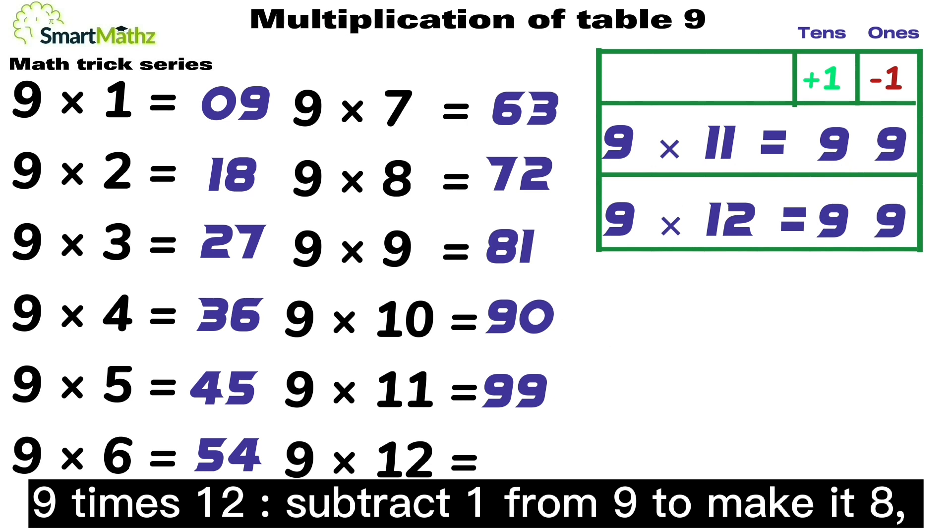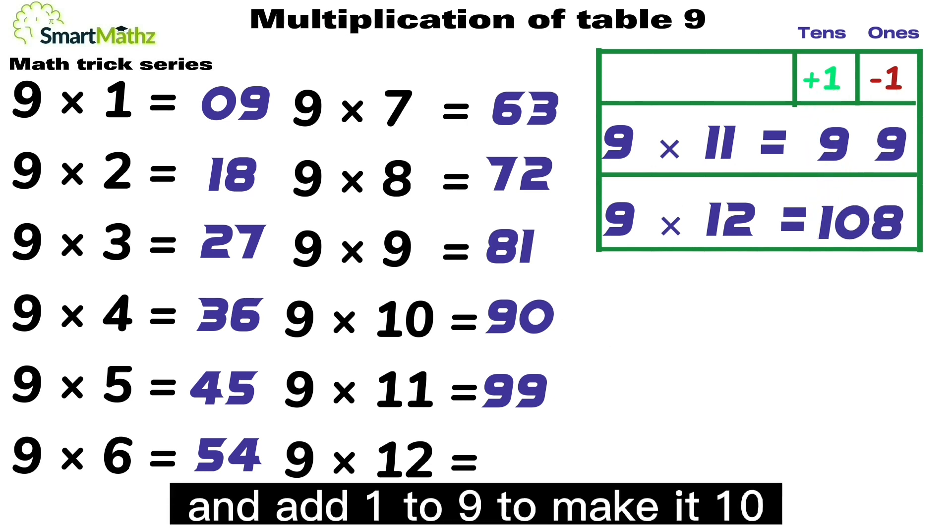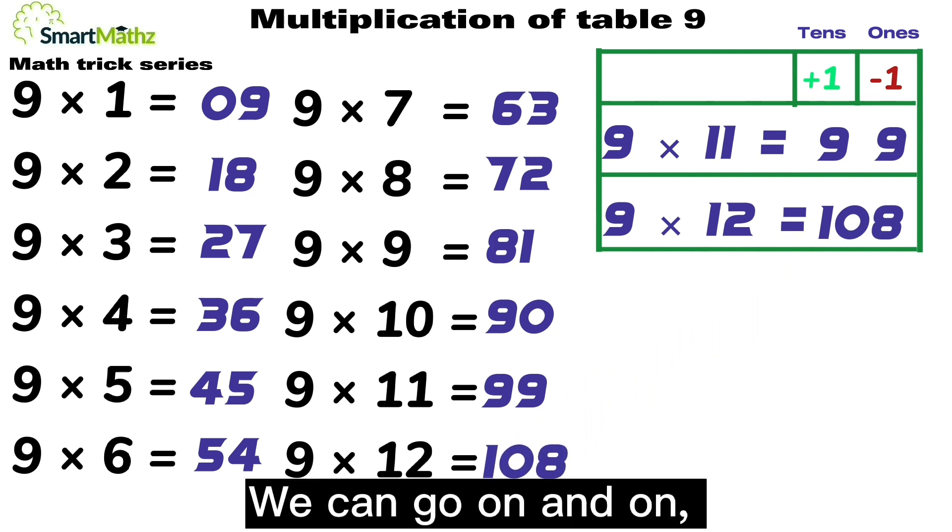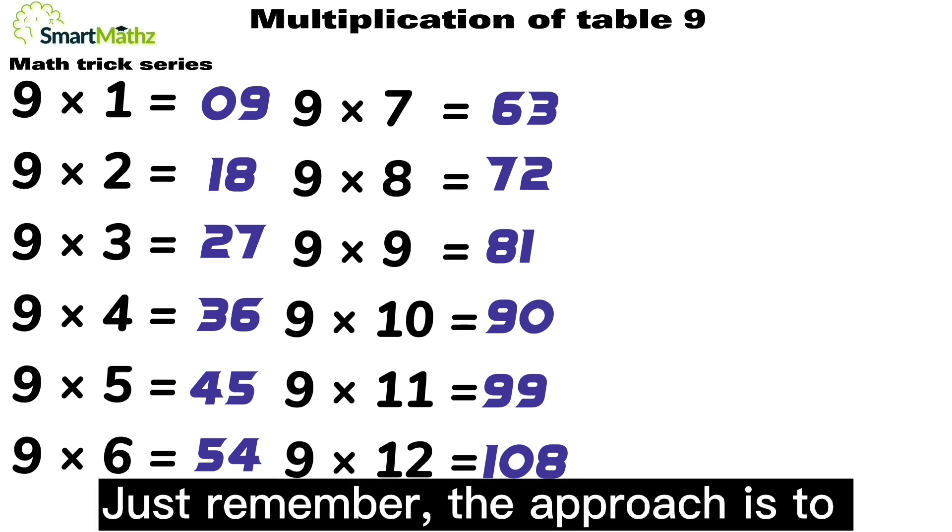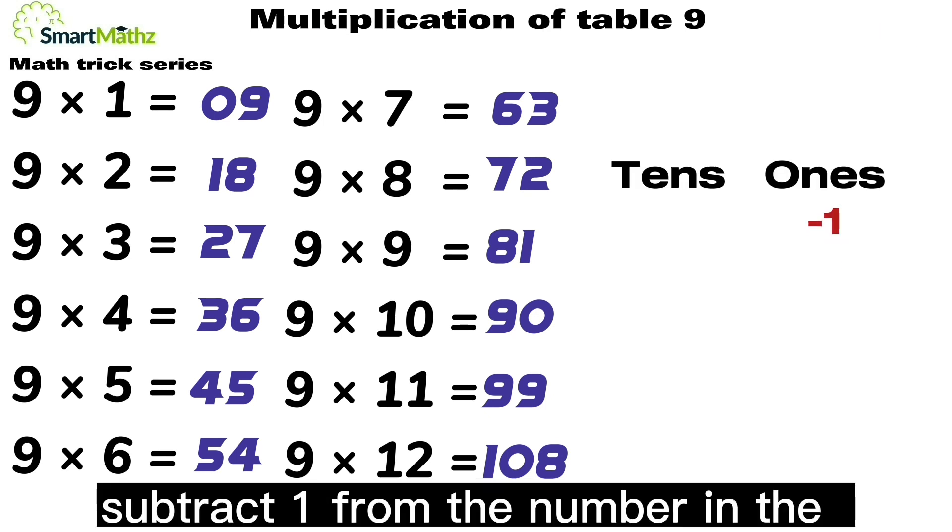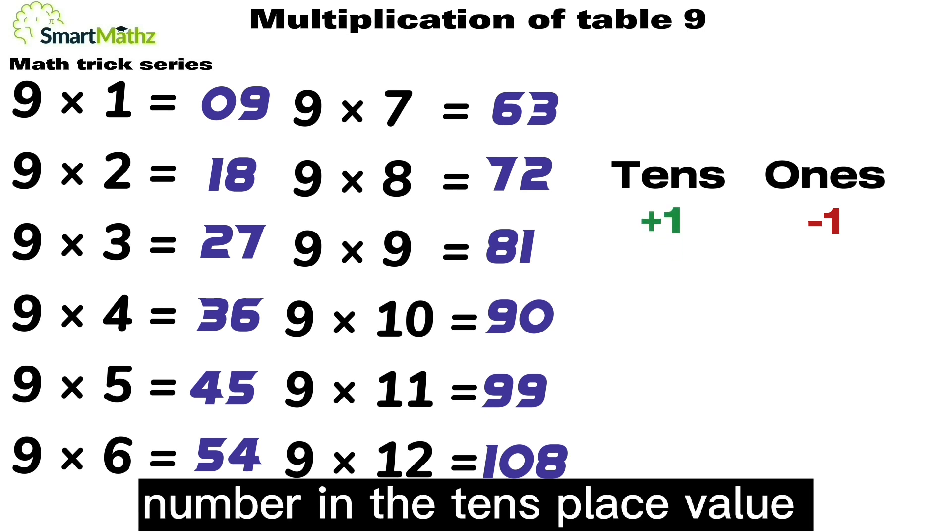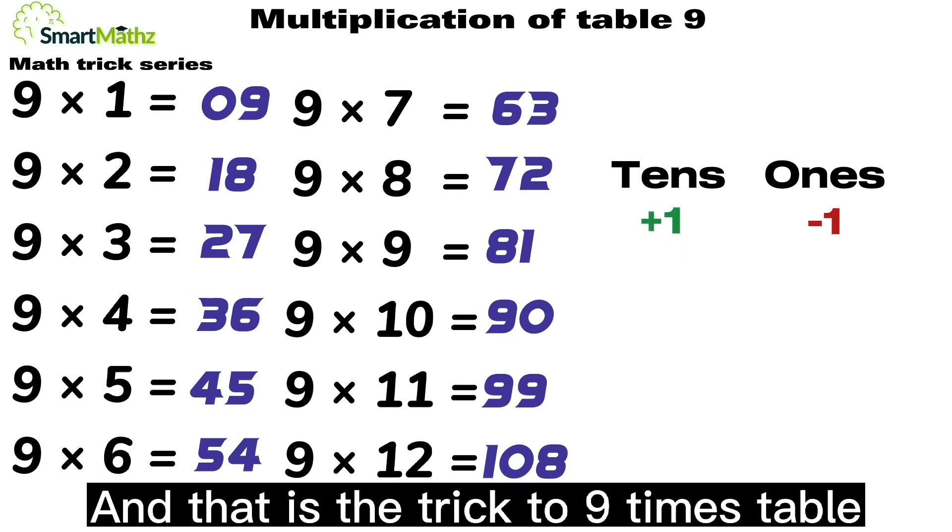9 times 12, subtract 1 from 9 to make it 8, and add 1 to 9 to make it 10. It equals 108. We can go on and on. Just remember, the approach is to subtract 1 from the number in the ones place value, and add 1 to the number in the tens place value. And that is the trick to 9 times table.